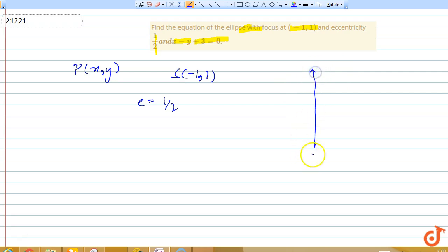We have a condition for the ellipse that the distance of all the points on the ellipse - distance of points of the ellipse from a fixed point.